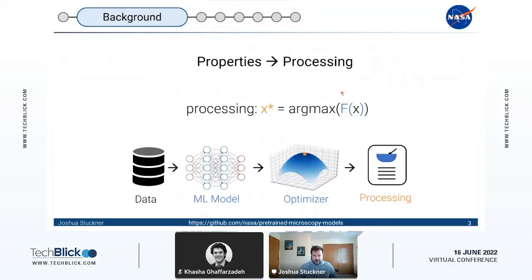With modern approaches we can start with some data, legacy data or a new experiment we do, build a machine learning model that establishes the relationships between process and processing, then use some optimizer to solve this optimization problem and find the optimal processing conditions. If we do this iteratively then it's known as Bayesian optimization or active learning where we can achieve our fit-for-purpose materials with fewer experiments and less money.